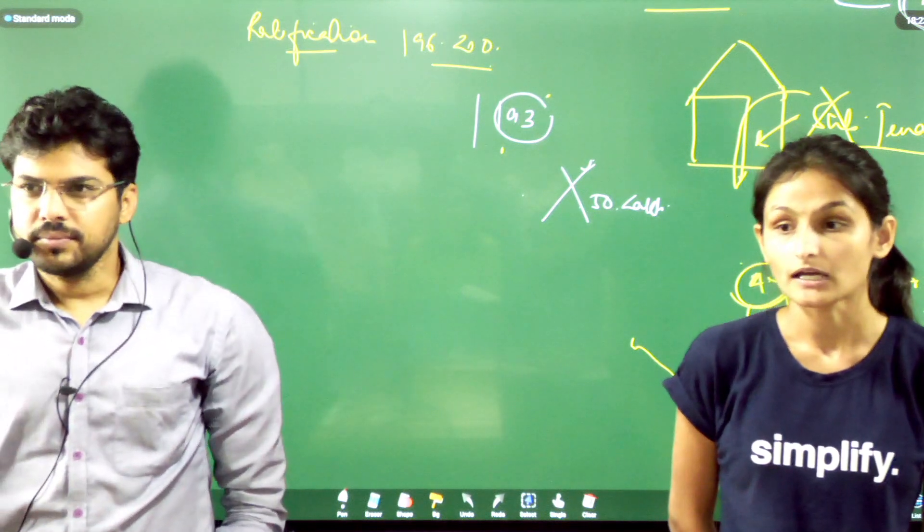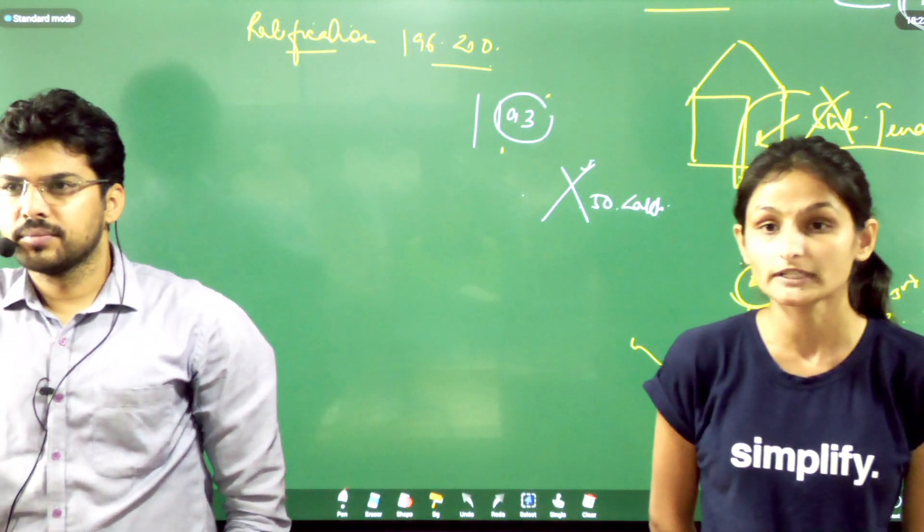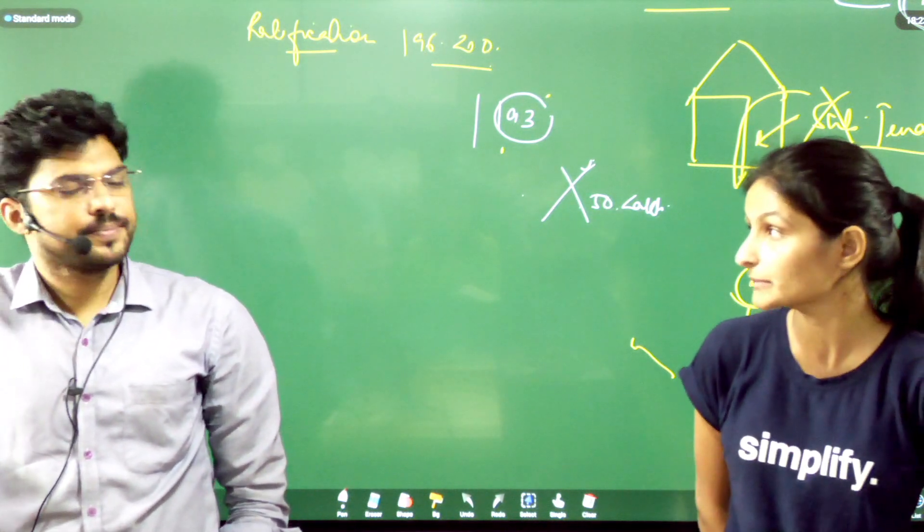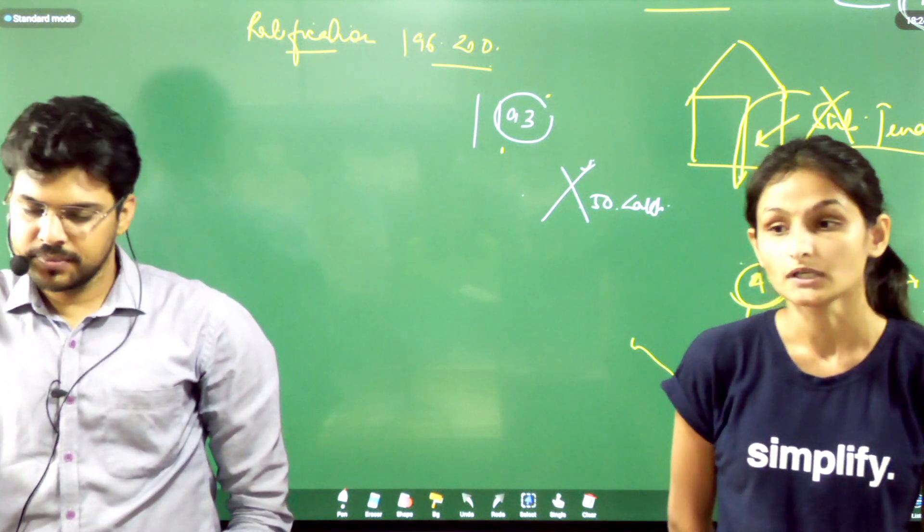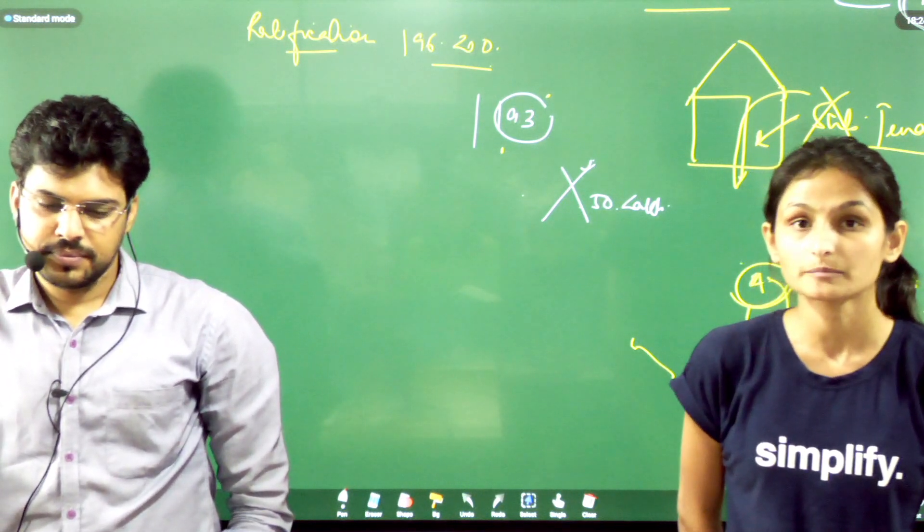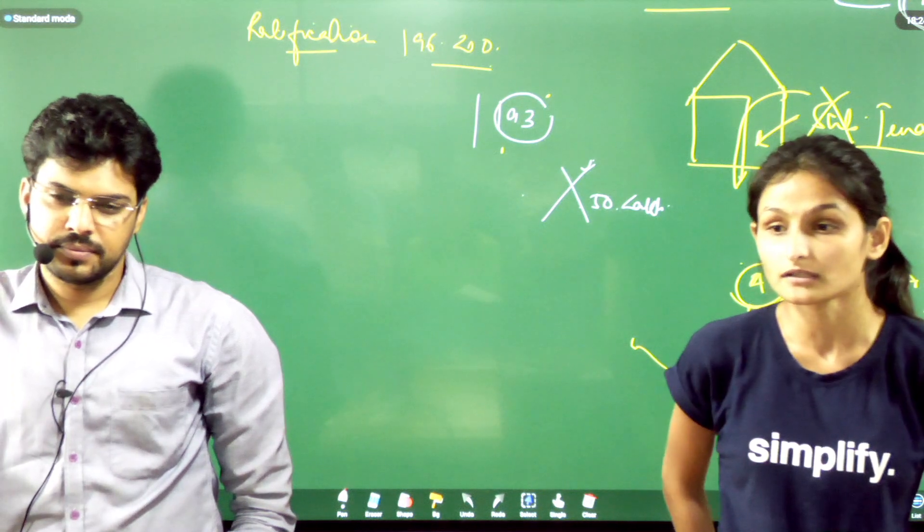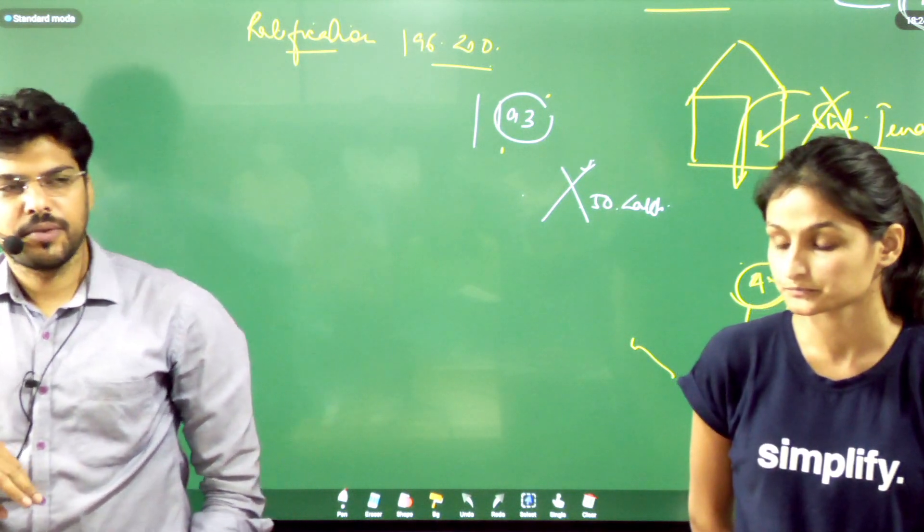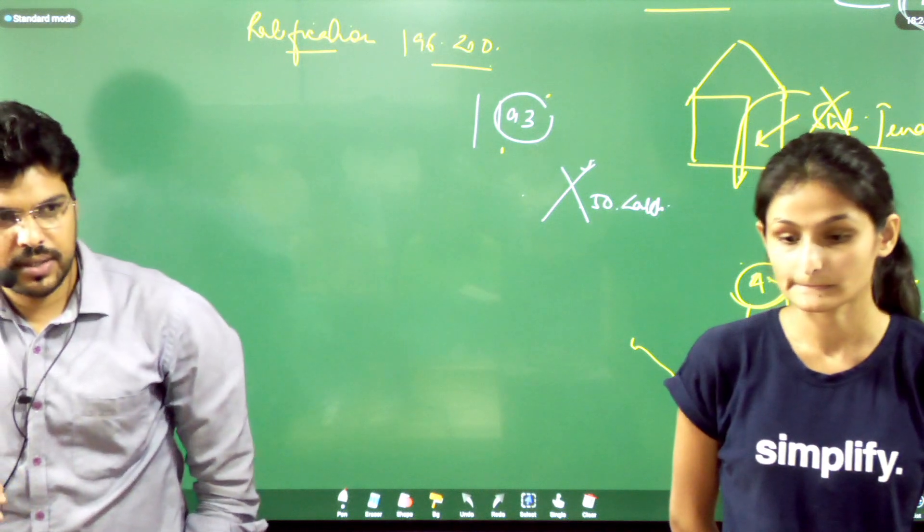No appeal shall lie to any decree or order passed under this section. No appeal or review shall be allowed. And subsection 4, nothing in this section shall prevent any person from establishing title by any other means.